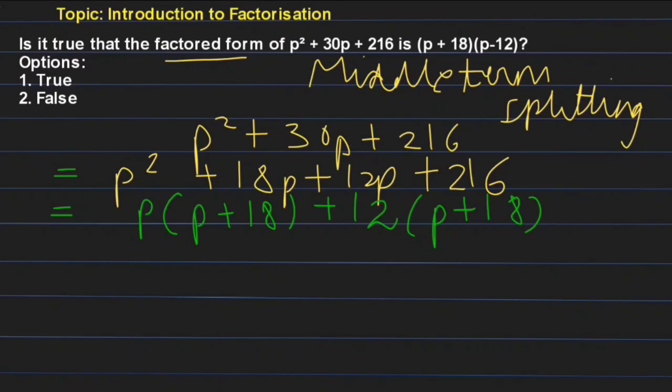So now what you have: you have (p + 18)(p + 18) here. Then you can write it like this: this equals (p + 18) and (p + 12).